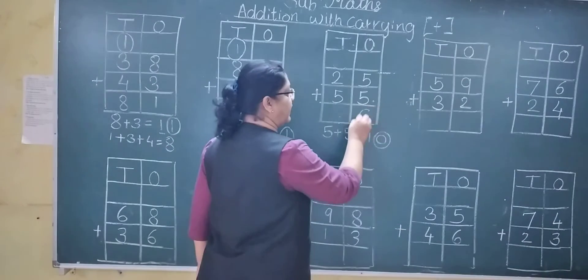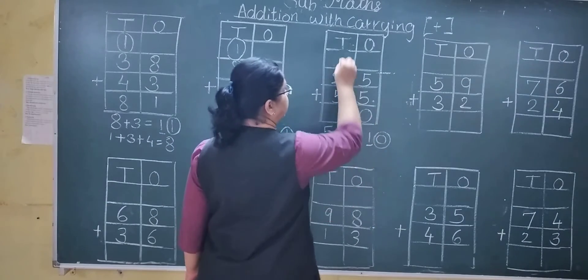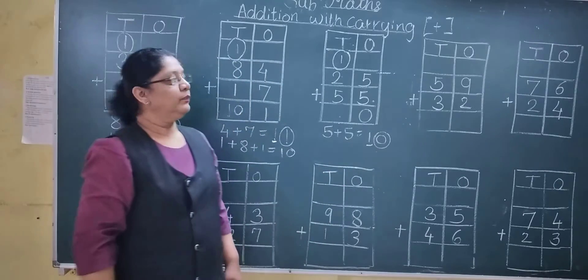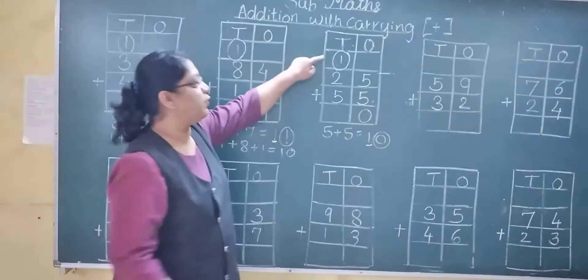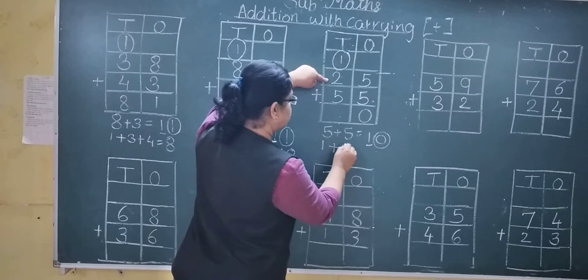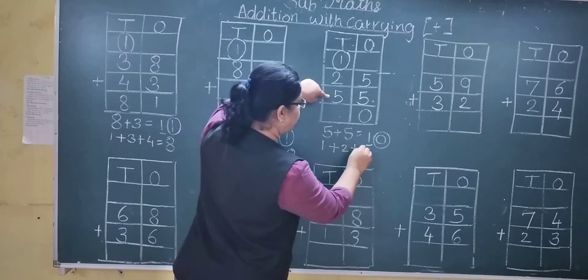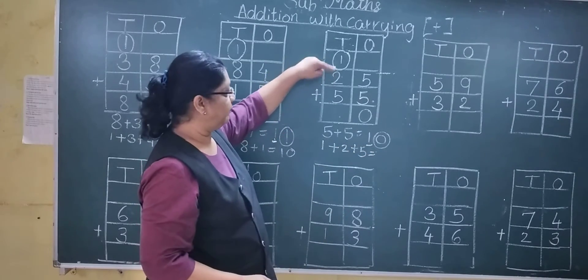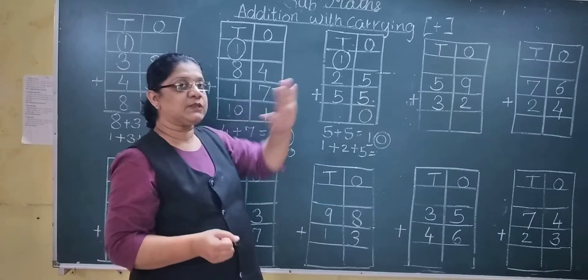This 0 ones you will write here, and this 1 ten, carry over to the tens column. Now add carry also. 1 plus 2 plus 4. 1 plus 2 is 3, and 3 plus 4.